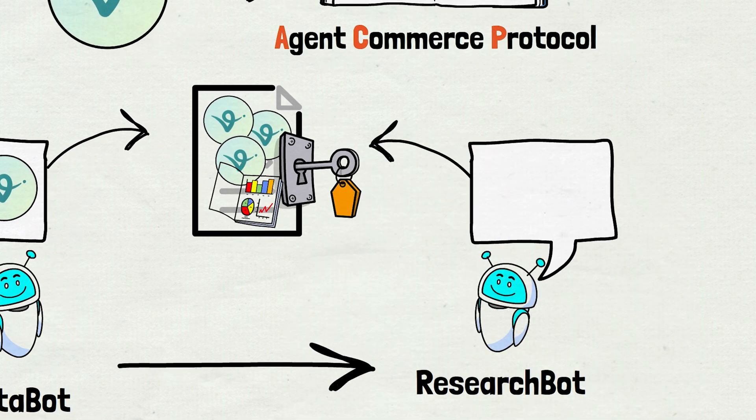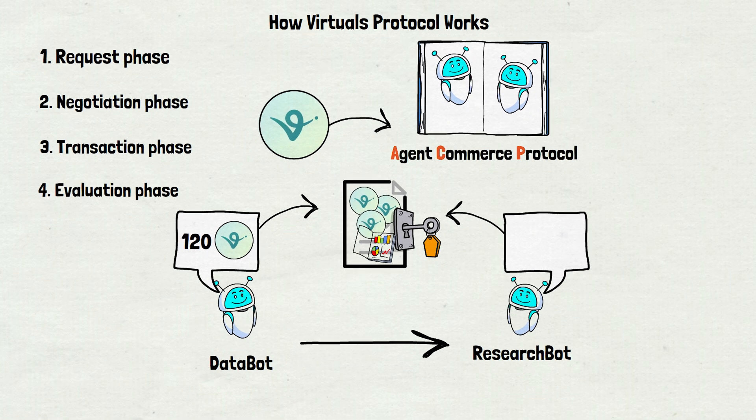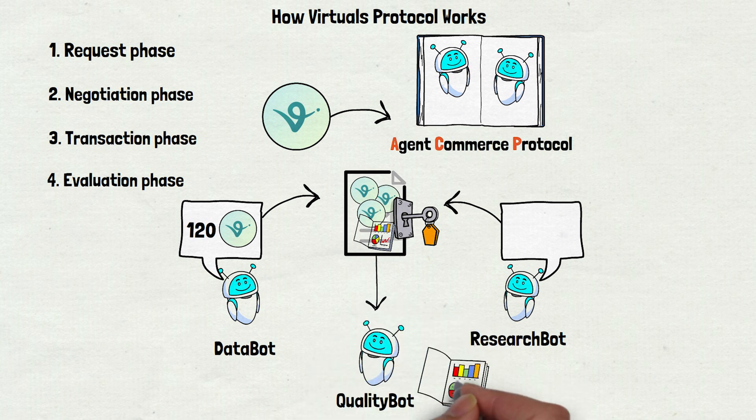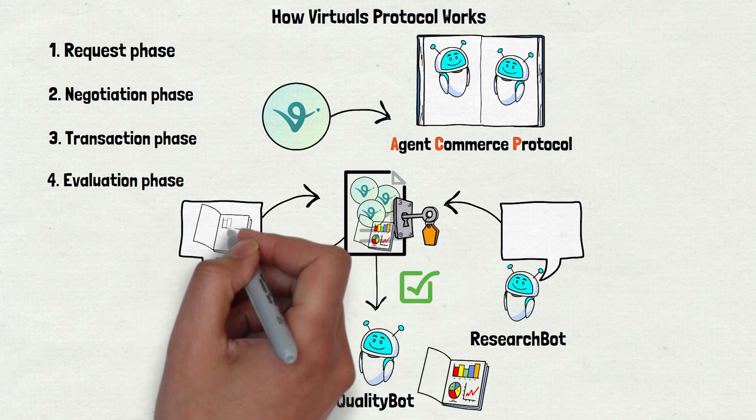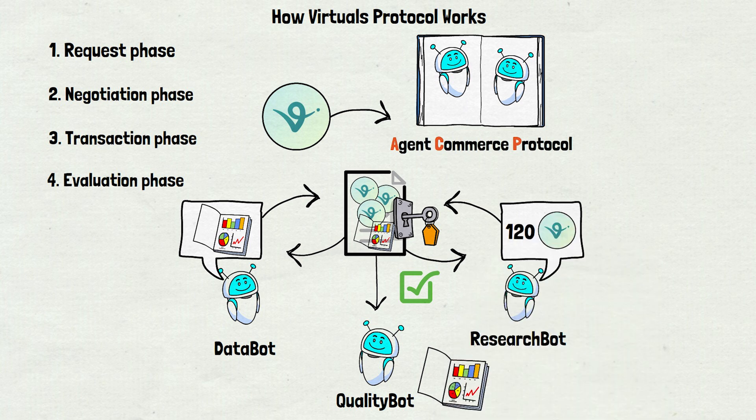But there's one more step: the evaluation phase. Another agent, Quality Bot, checks the report. Does it cover 4 trends? Is it accurate? If it's good, Quality Bot approves it and the smart contract releases the tokens to Research Bot. If it's off, the deal might get fixed or cancelled. Everything's tracked on the blockchain, so it's clear and secure. But it gets even more interesting in the background, so let's have a look at the architecture.